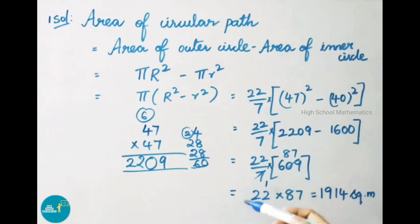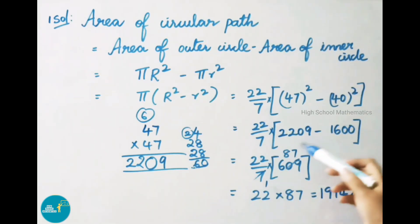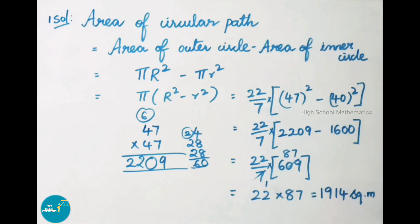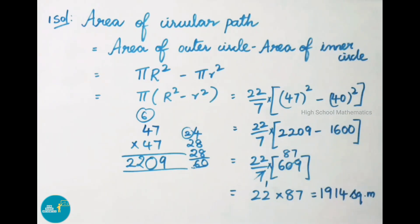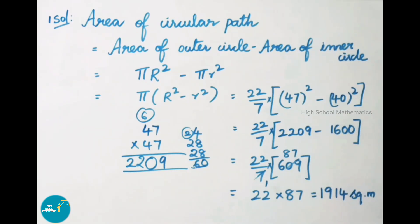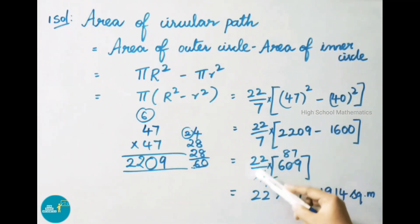That equals 22/7 into (2209 − 1600). To subtract: 2000 − 1600 = 400, plus 209 = 609. So we have 22/7 into 609.